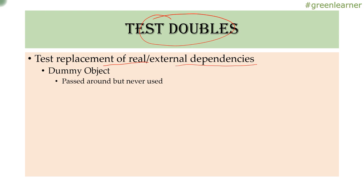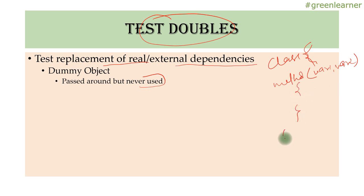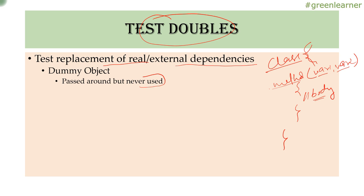The first kind is the dummy object — passed around but never used. For example, if a method takes two parameters var1 and var2, and you are testing an if-block where only var1 is used, you create the actual object for var1 but pass null for var2. Dummy objects are passed just to fill the parameter gap but are never actually used during the unit test.